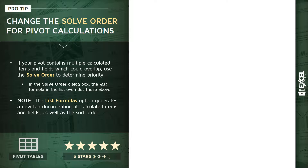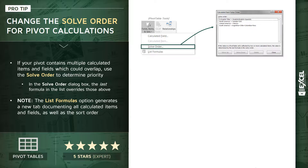The solve order dialog box lets you determine the priority in which formulas are evaluated. From your pivot table tools, you can drop into your Fields, Items, and Sets menu and click the Solve Order button to access that dialog box. Within that window, the last formula in the list will override those above it. I'll show you an example of exactly why that's important in our demo.